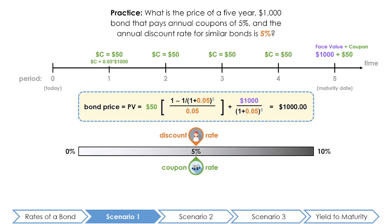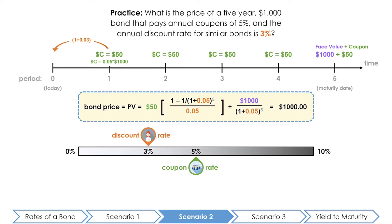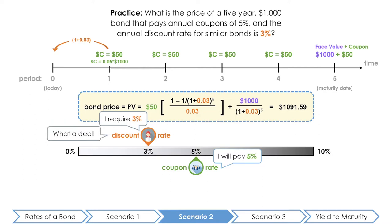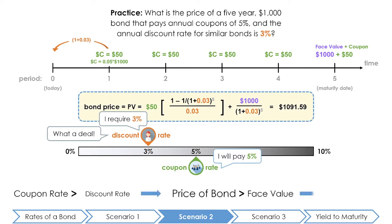Now imagine that after the bond was issued the annual discount rate dropped from five percent to three percent. Using the bond valuation formula, the price of this bond is equal to $1,091.59, which is greater than the principal of one thousand dollars. The market discount rate is now three percent, but this bond is paying a coupon rate of five percent — more than what the bondholder requires. If the bondholder can earn a coupon rate greater than their required rate of return, they would be willing to pay more for this great deal. Thus when the coupon rate is greater than the market discount rate, the bond sells at a premium, quoted at approximately 109.